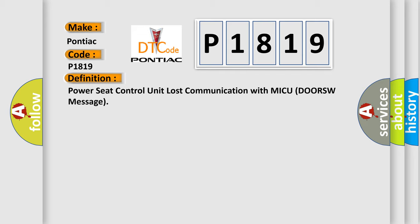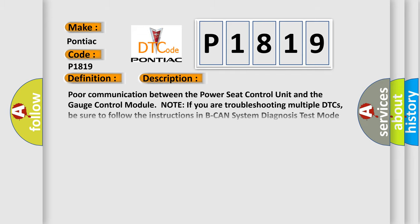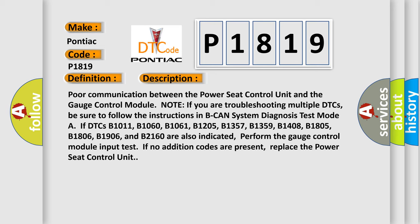Here is a short description of this DTC code: poor communication between the power seat control unit and the gauge control module. Note: if you are troubleshooting multiple DTCs, be sure to follow the instructions in B-CAN system diagnosis test mode A if DTCs B1011, B1060, B1061, B1205, B1357, B1359, B1408, B1805, B1806, B1906, and B2160 are also indicated. Perform the gauge control module input test if no additional codes are present.